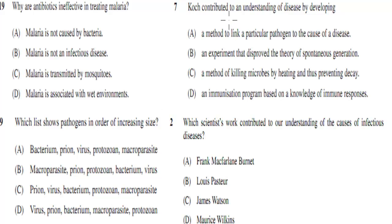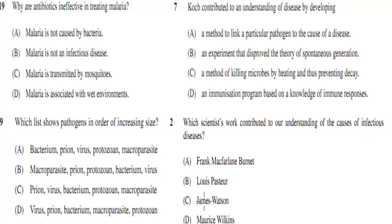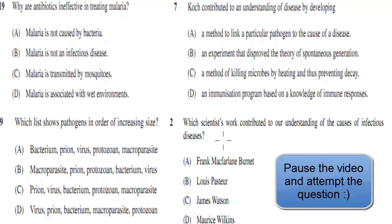The next question: which scientist contributed to an understanding of disease by developing a method that linked a particular pathogen to the cause of disease? And which scientist contributed to our understanding of the cause of infectious disease? A. Frank McFarlane Burnett. B. Louis Pasteur. C. James Watson. D. Morris Wilkinson. Pause the video and attempt the questions.